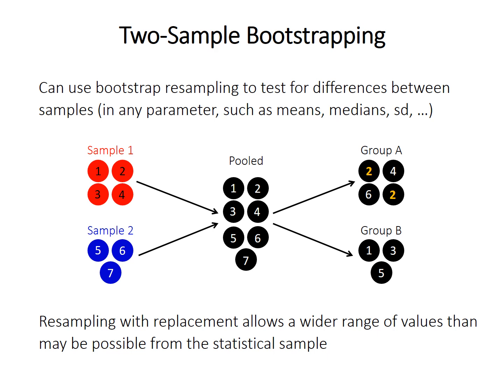So the previous video discussed how this resampling with replacement during bootstrapping allows some observations to be drawn multiple times, other ones maybe not at all. And so this leads to a wider range of parameter values like mean or median than is possible from just the sample itself. Essentially what we're doing here is extrapolating more to what we might expect from the population.